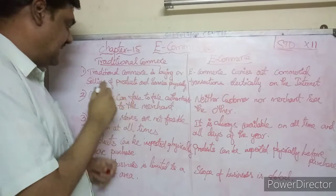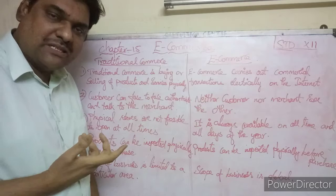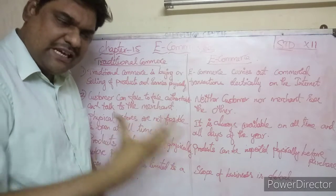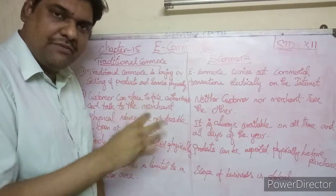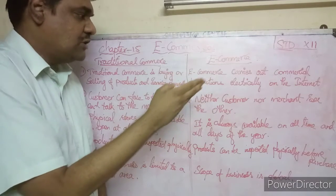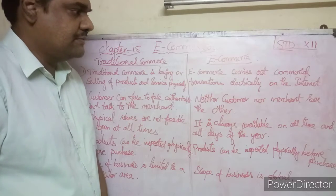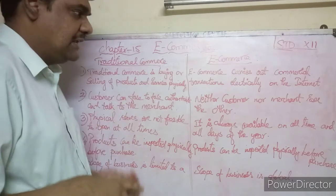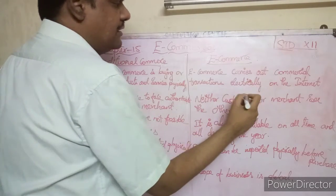Traditional commerce is buying or selling of products and services physically. E-commerce carries out commercial transactions electronically on the internet. So in traditional commerce, buying and selling happens physically, whereas in e-commerce, transactions are done electronically on the internet.